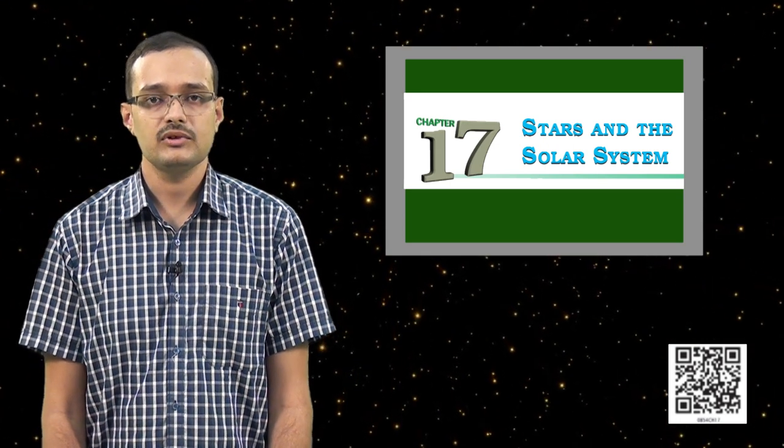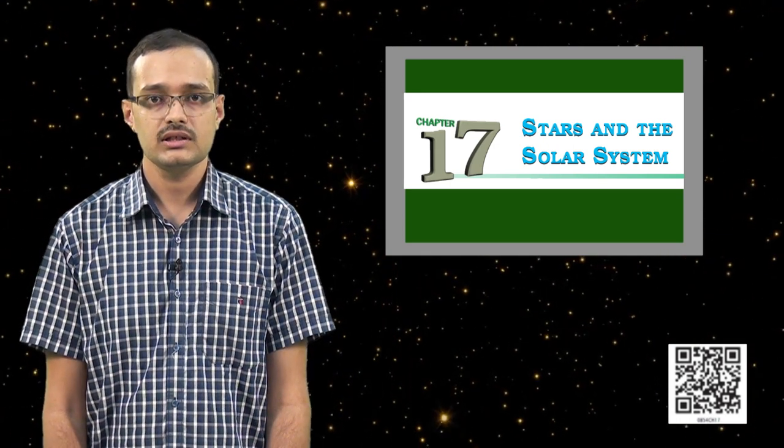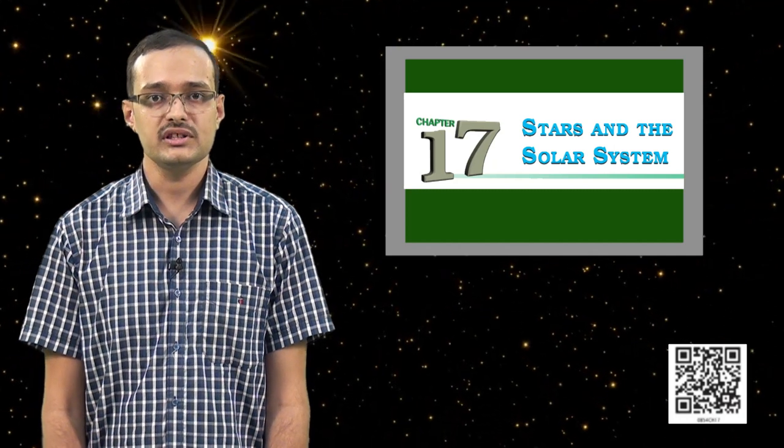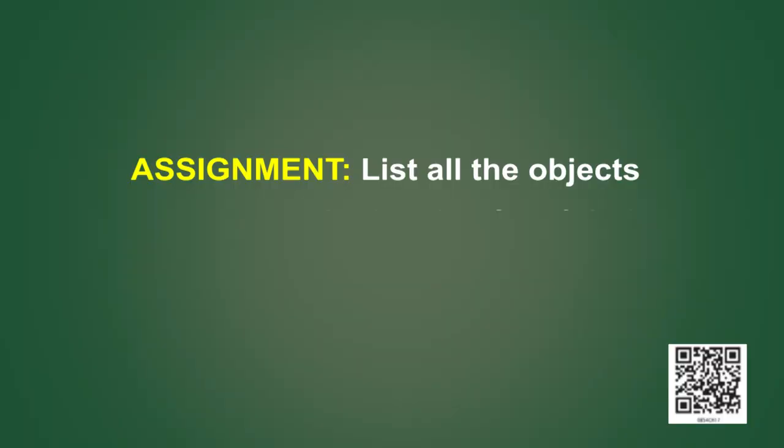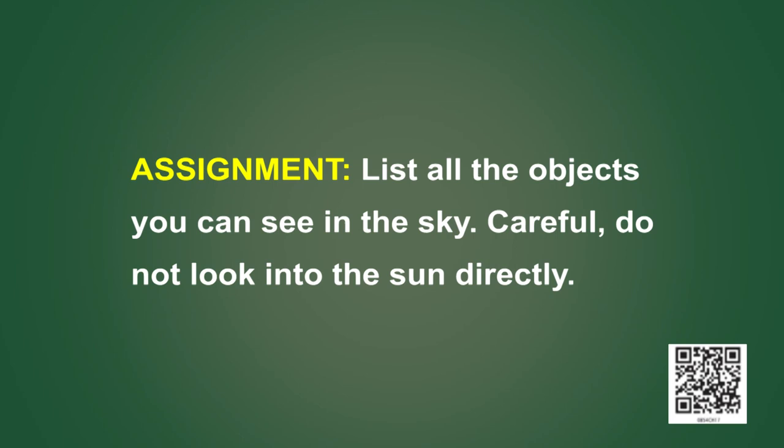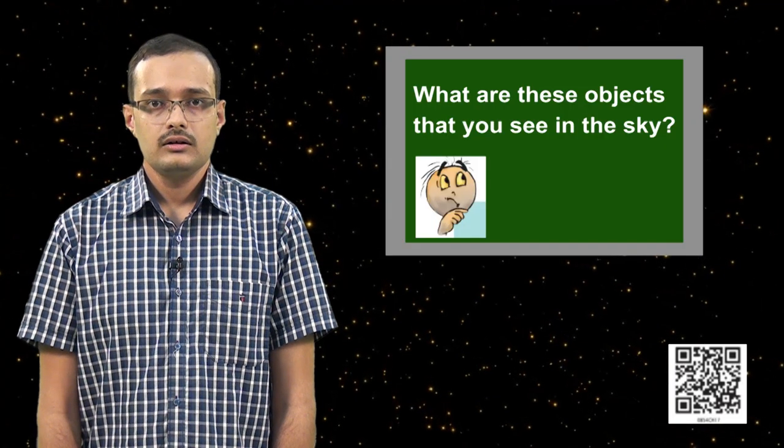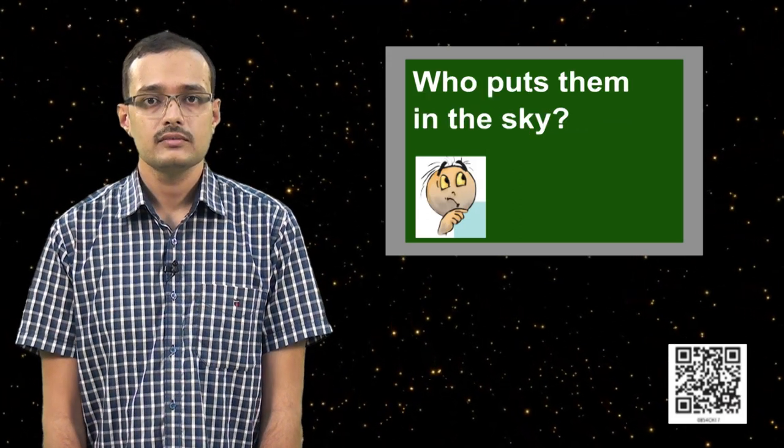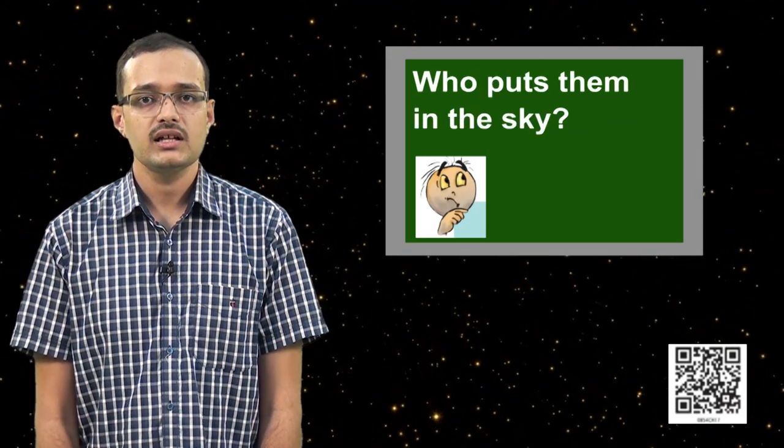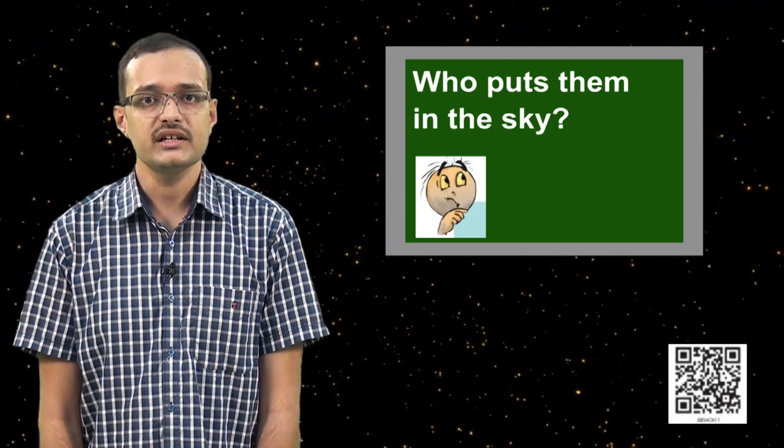So far, we have seen what celestial objects are. We have seen some examples of celestial objects. We have also seen what astronomy is and what astronomers do. Now, here is an assignment for you. List all the objects you can see in the sky. Careful, do not look into the sun directly. What are these objects that you see in the sky? Where do these celestial objects come from? Who puts them in the sky? We will learn answers to all these questions in this chapter.